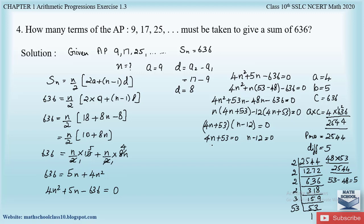This gives n = −53/4 or n = 12. Since n cannot be negative, it must always be a positive counting number. Therefore n = 12, meaning 12 terms of the AP must be taken to give a sum of 636.